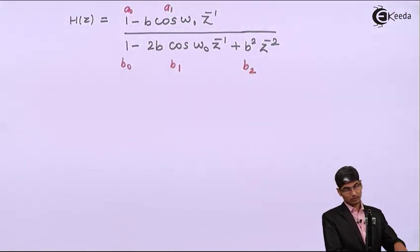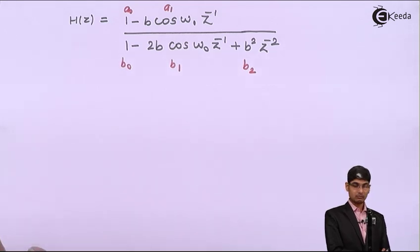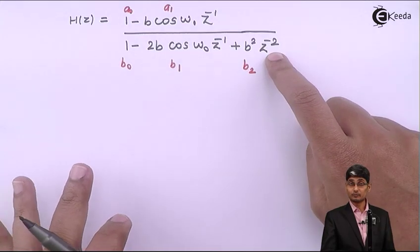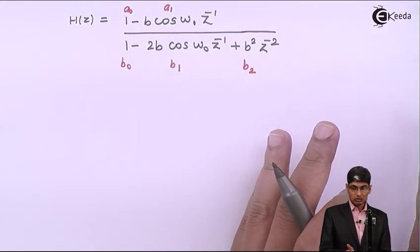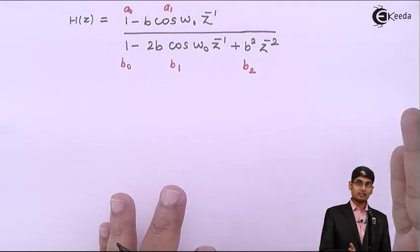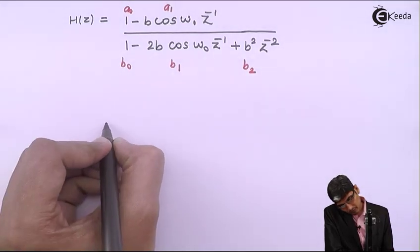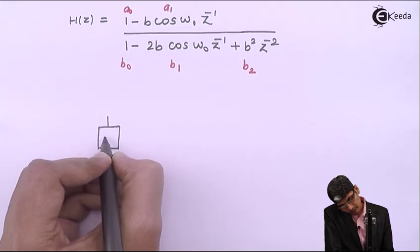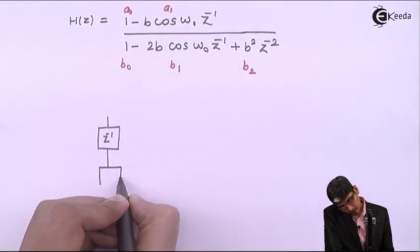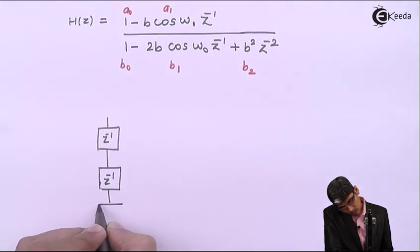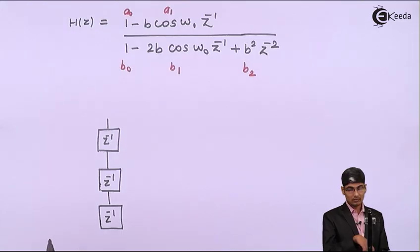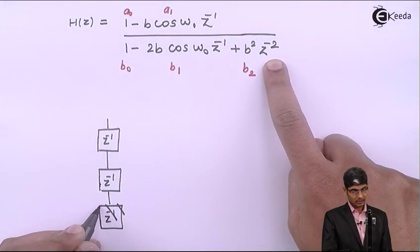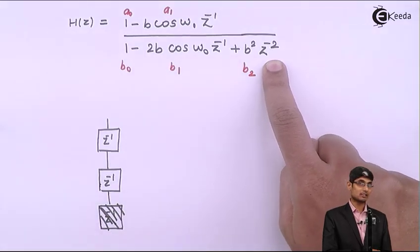Let us draw the Direct Form 2 structure. I'll write H(z) again: H(z) = [1 − b·cos(ω₀)·z⁻¹] / [1 − 2b·cos(ω₀)·z⁻¹ + b²·z⁻²]. The highest degree in the numerator or denominator polynomial is z⁻². So I need only 2 delay blocks — not 3. In Direct Form 2, we first draw a string of Z-inverses. Since there is no z⁻³ term, I will eliminate the extra Z-inverse.